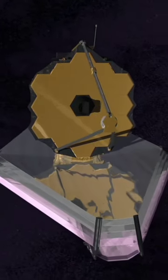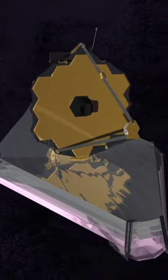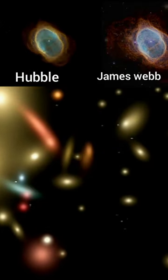While Hubble orbits around the Earth at an altitude of 570 kilometers, Webb is much farther away. It sits at the Earth-Sun L2 Lagrange point, 1.5 million kilometers away.